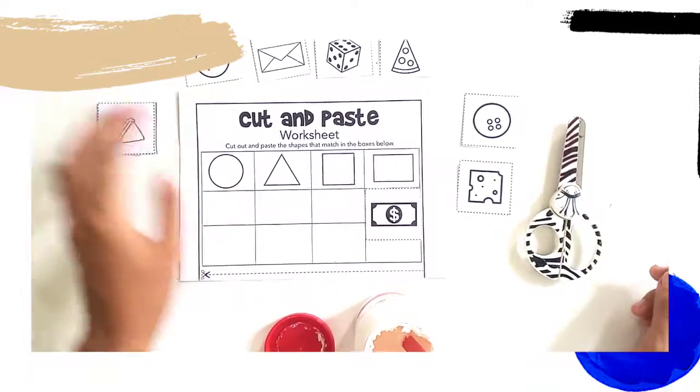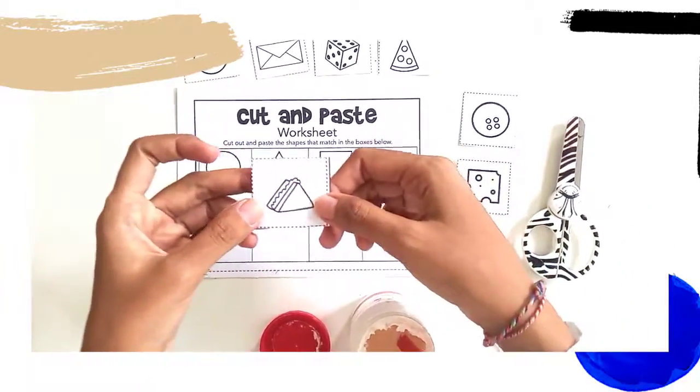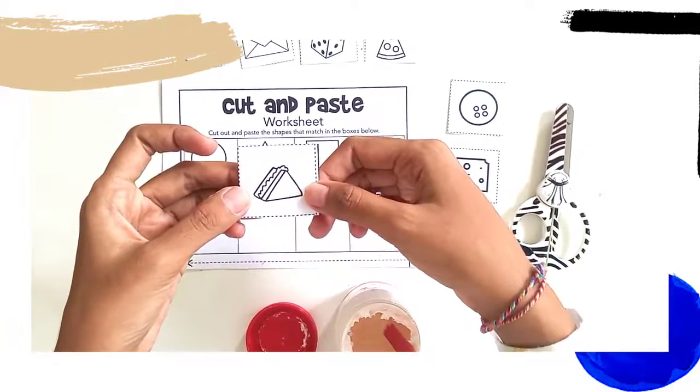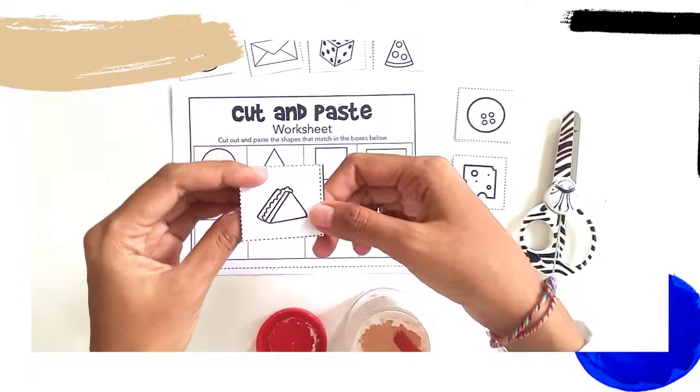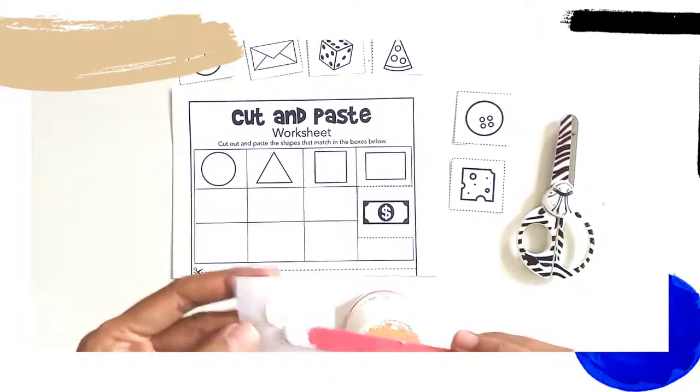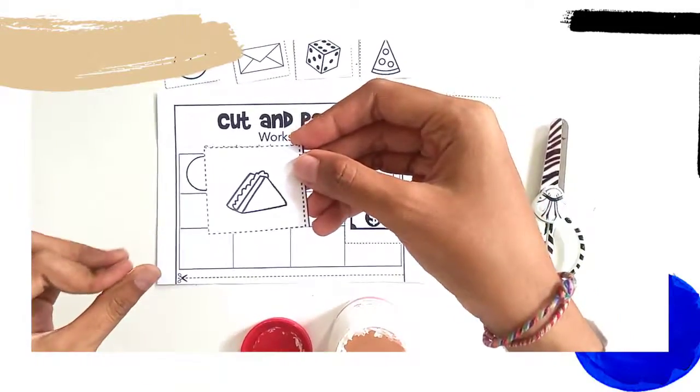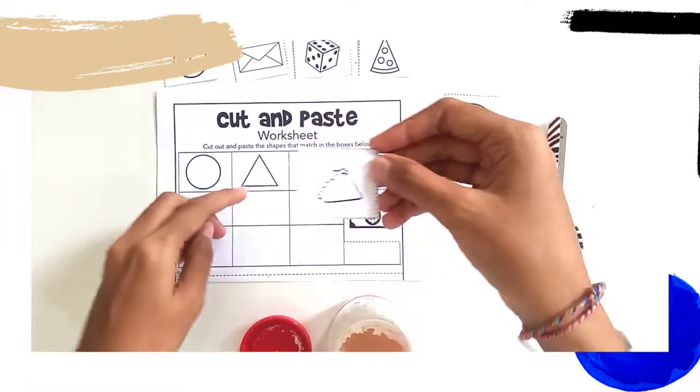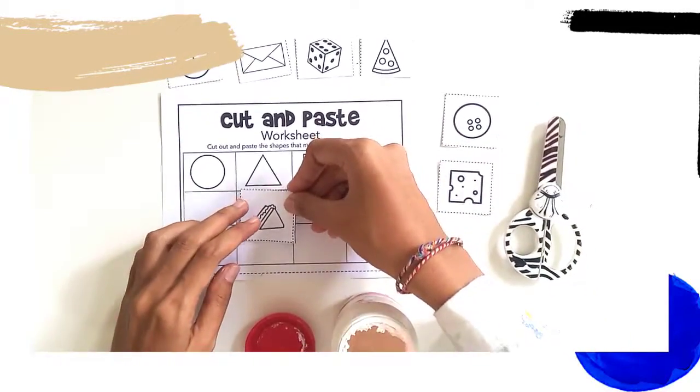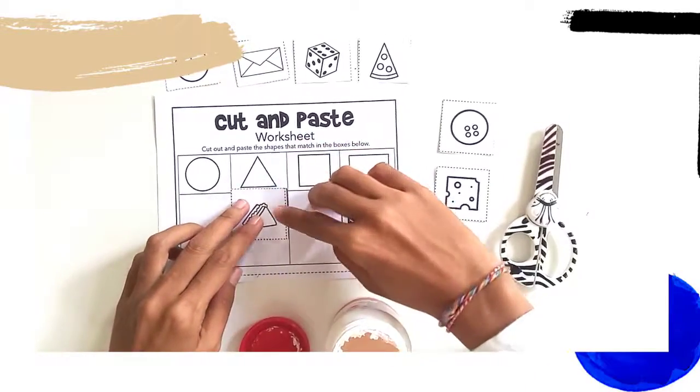Next, sandwich. Yeah. What shape is sandwich? Let's give glue. Okay, the sandwich shape is triangle here. Put it here.